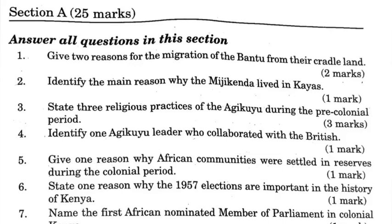Question 4: Identify a leader who collaborated with the British. One, Karari of Gatukure of Murang'a. Two, Kinyanjui wa Gathiramu of Dagoretti.